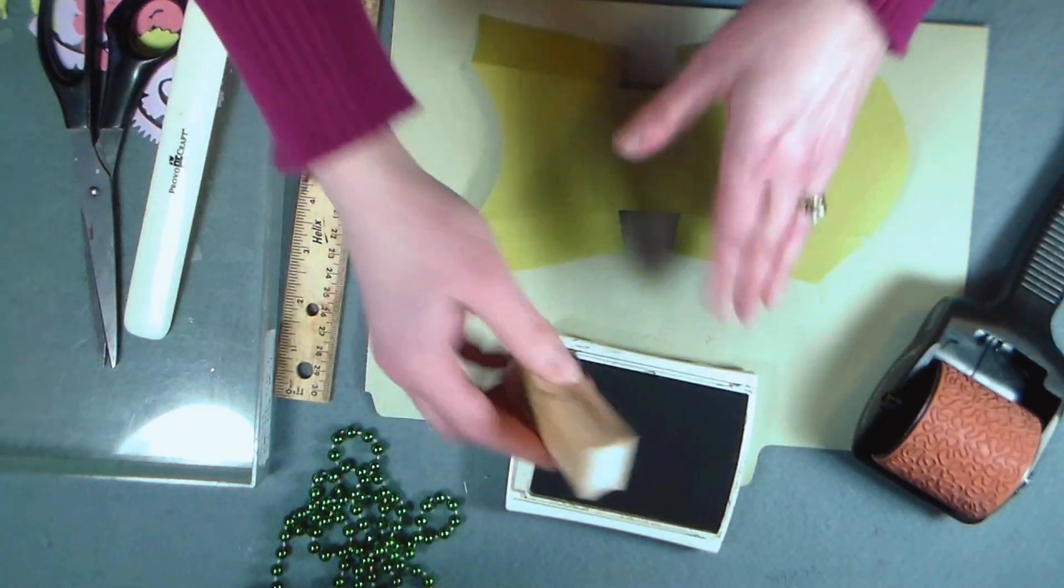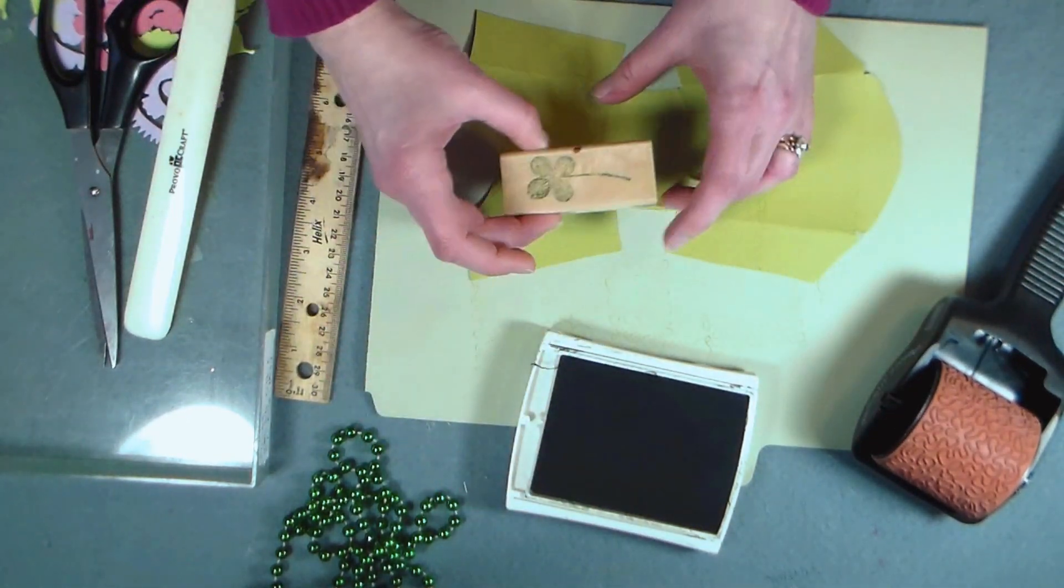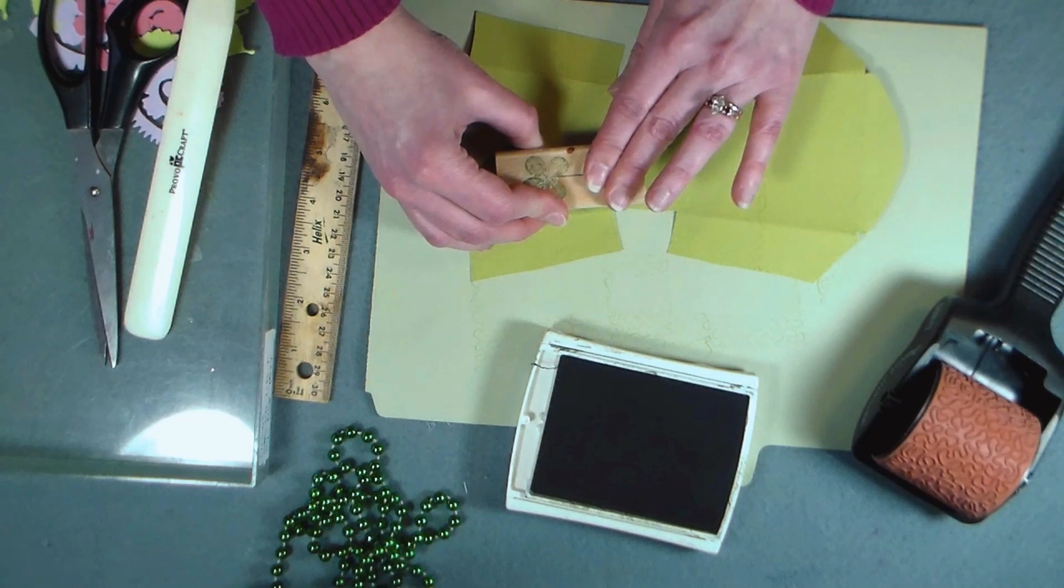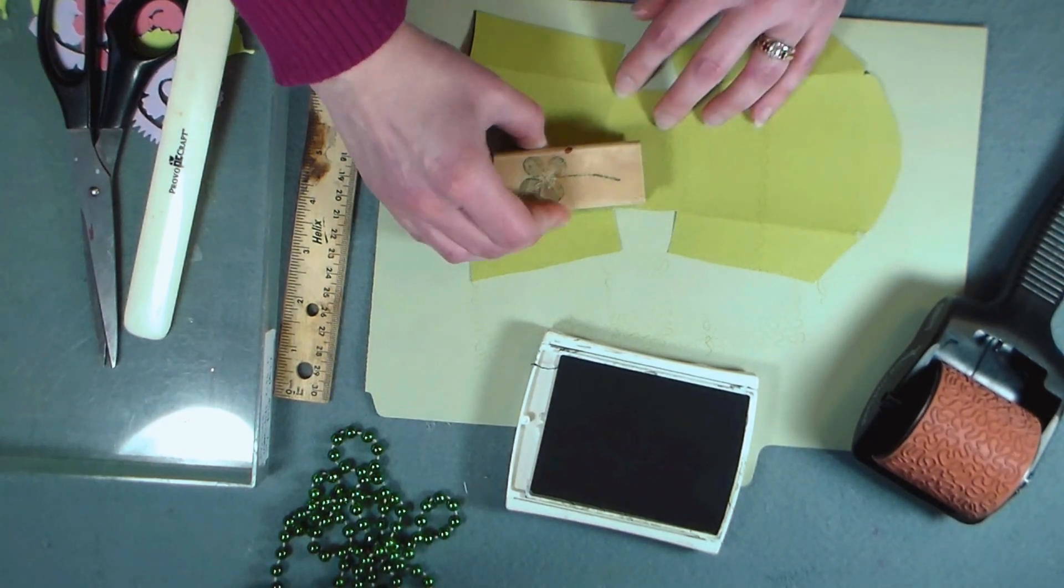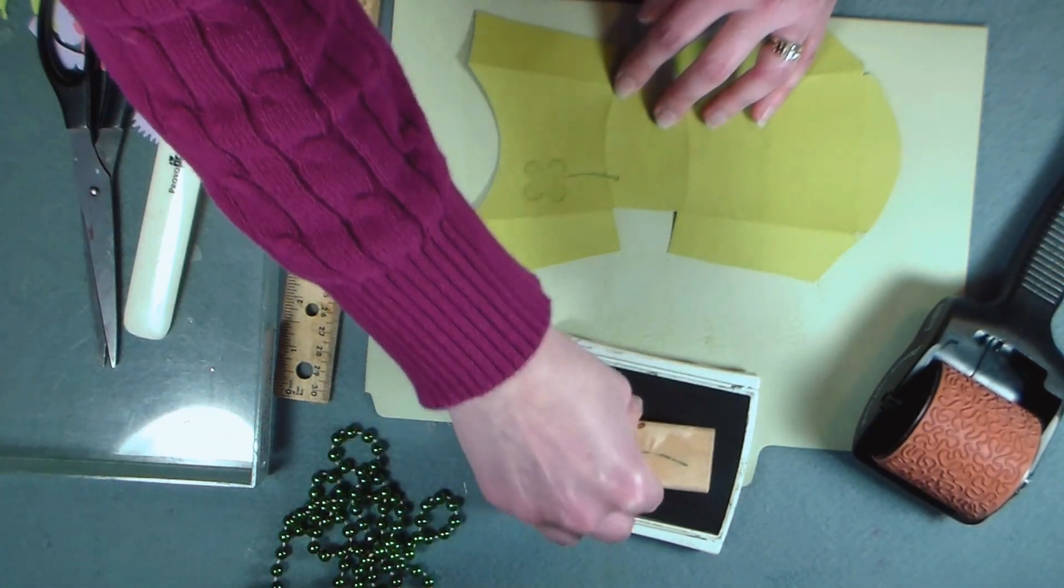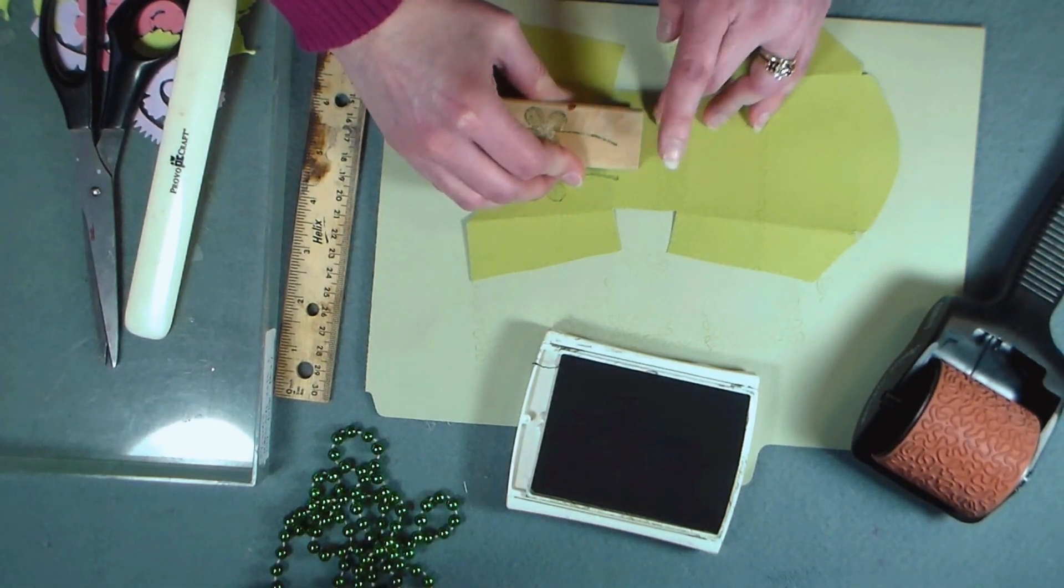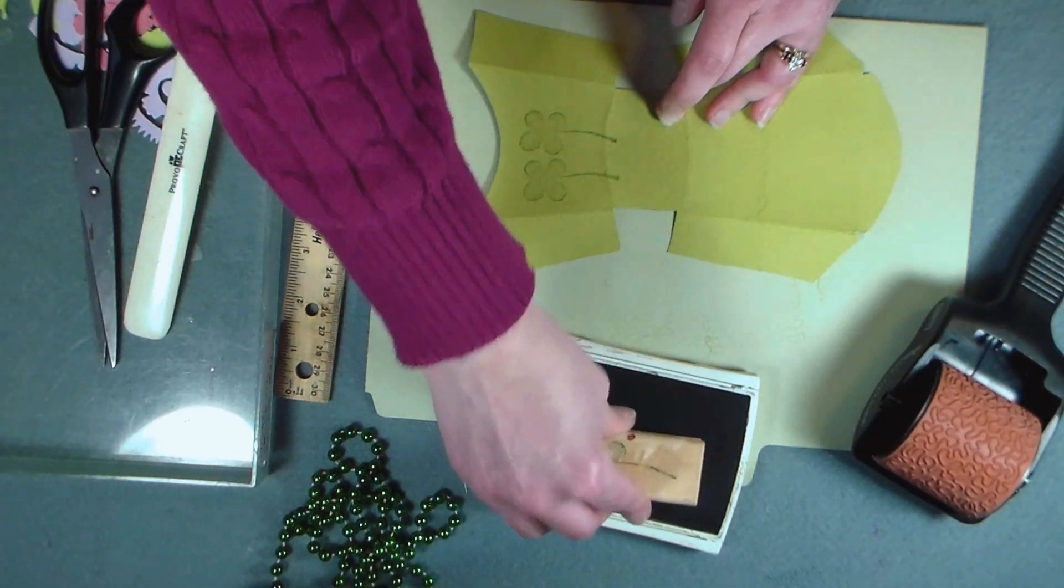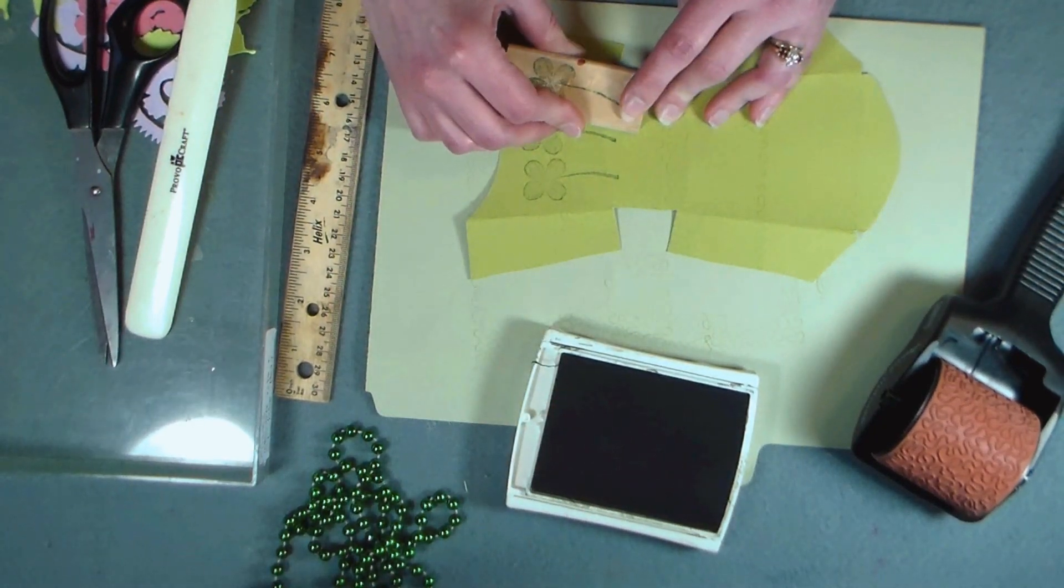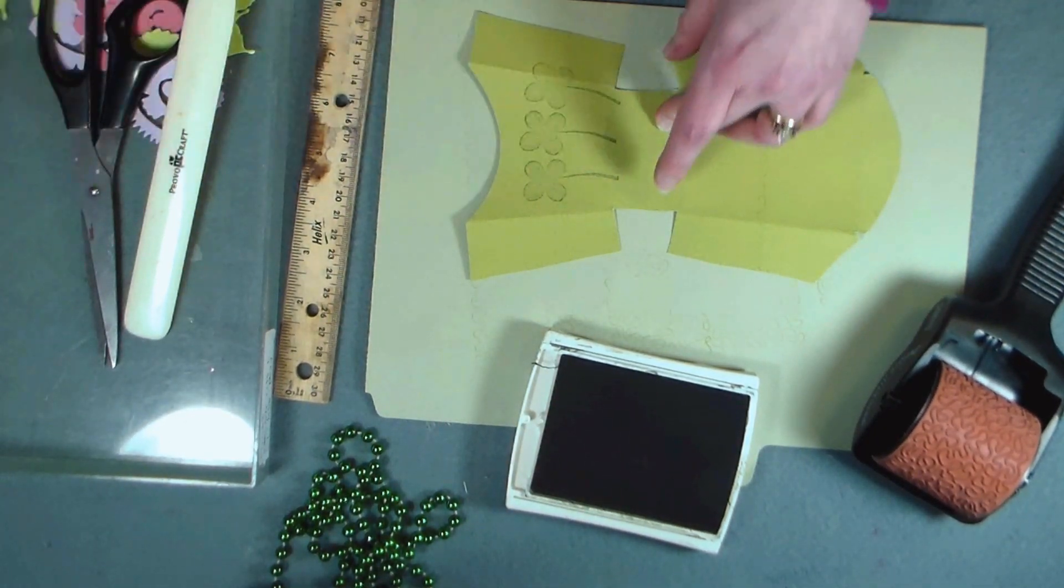Because it's so close to St. Patrick's Day, I decided to stamp a four leaf clover on the front of the box. I love stamps that look like pressed flowers and pressed leaves. I think I can fit this three times across the front of my box to add a little bit of seasonalness and texture, so that's what I'm going to do.